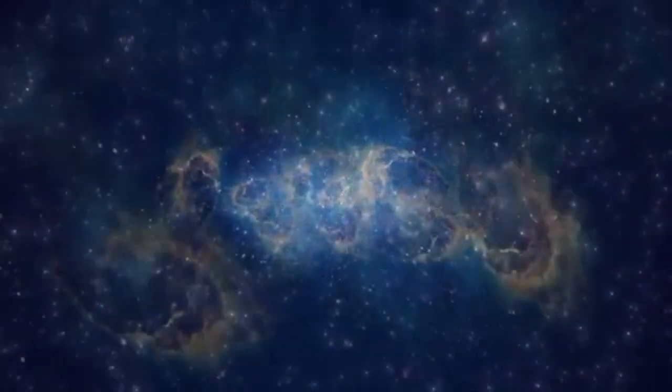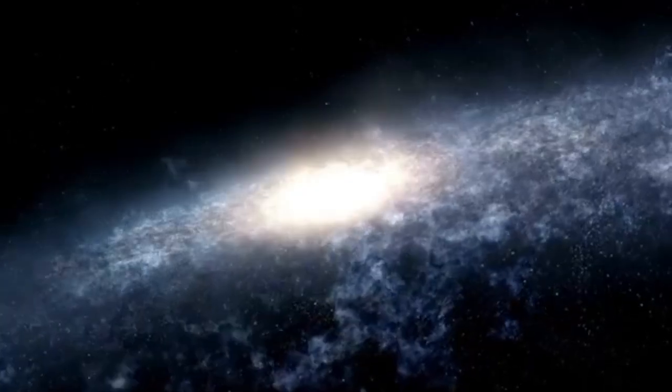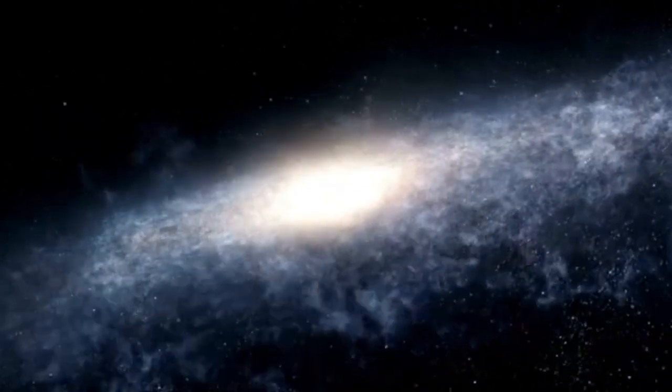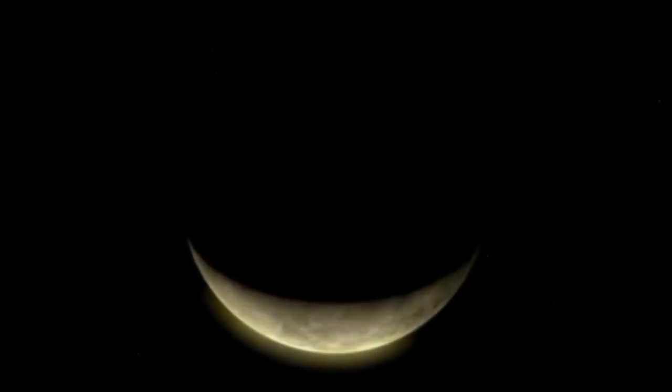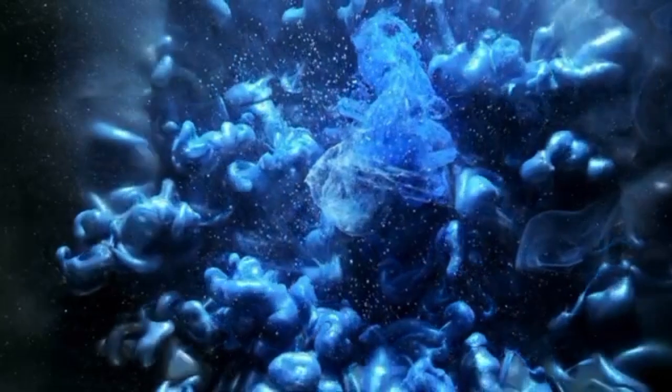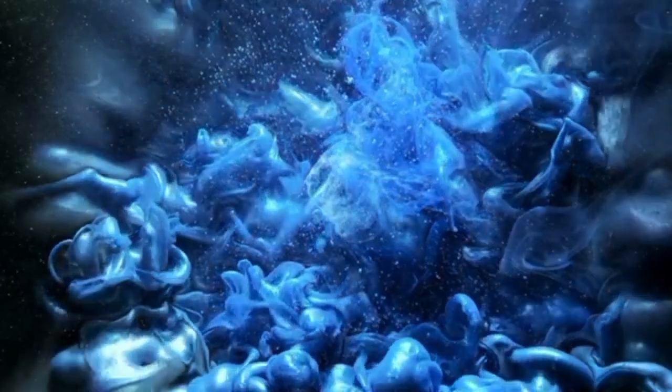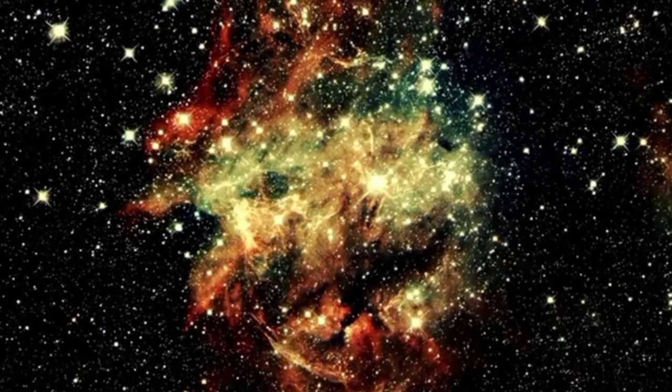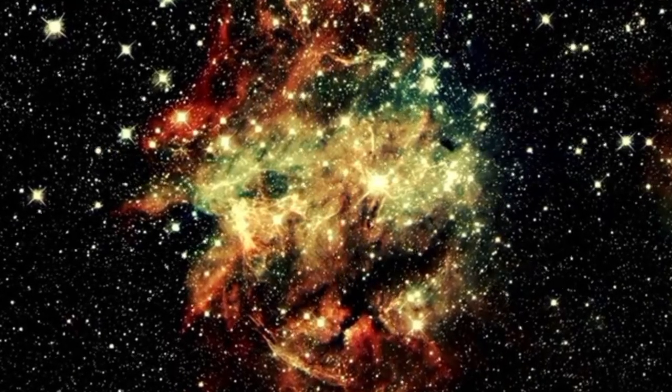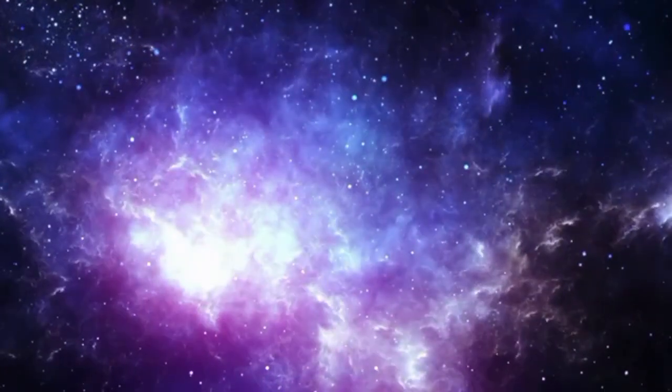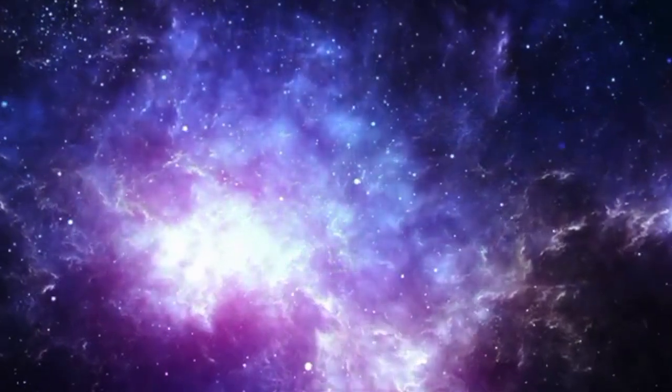Supernovae release an astonishing quantity of radiation and energy. Some researchers believe that these powerful forces might interact with dark matter in observable ways. One fascinating hypothesis suggests that dark matter exists as weakly interacting massive particles, or WIMPs. If WIMPs are real, their interaction with the energy generated by a supernova like Betelgeuse could provide information about their nature. Such an interaction would be a revolutionary discovery, offering the first direct evidence of dark matter, a phenomenon that has eluded scientists for decades.